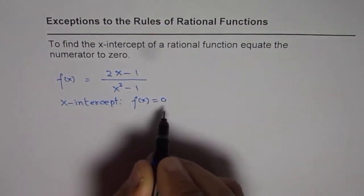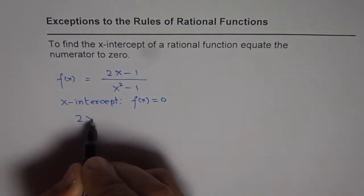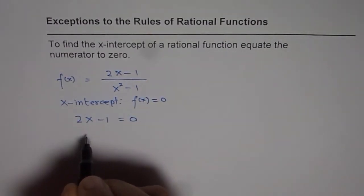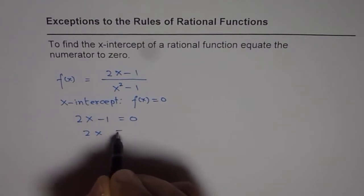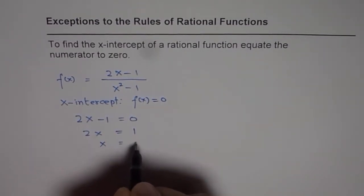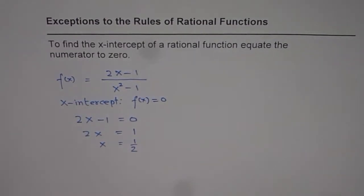The y-value should be equal to 0 and therefore we equate the numerator 2x minus 1 to 0. Solve for x. We say 2x equals 1 and x equals one-half. Perfect. So the x-intercept is at x equals one-half.